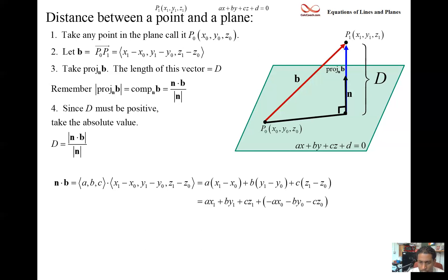Let's look closer at that. Let's distribute. So we have ax₁ - ax₀, by₁ - by₀, cz₁ - cz₀. And we distribute.